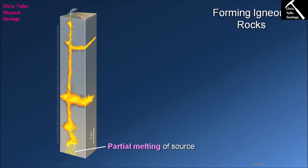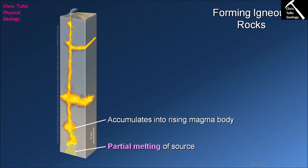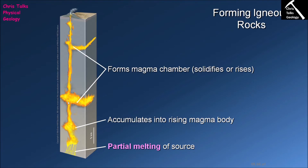Once we've formed our magma, it's going to want to rise because magma is less dense than the surrounding rock. It's more buoyant, so it will head upwards. Our magma will initially begin to accumulate into a rising body and will steadily start moving its way through the crust, occasionally stopping to become part of a magma chamber.